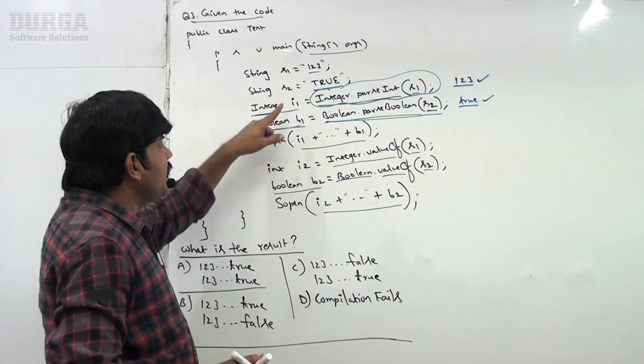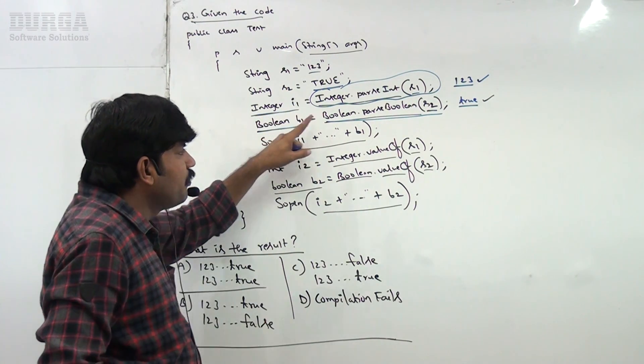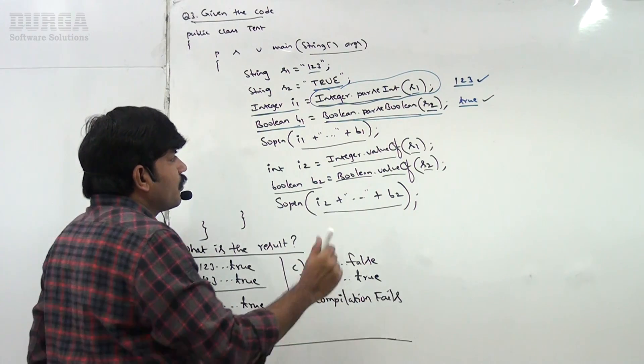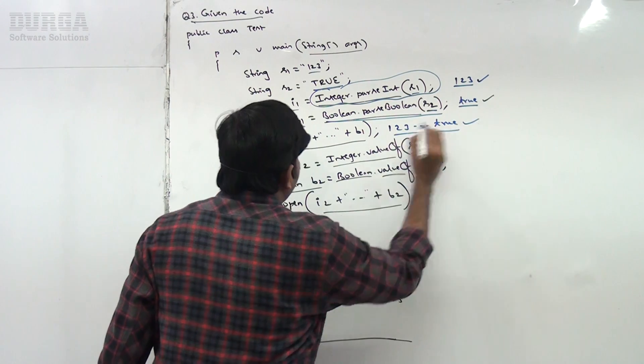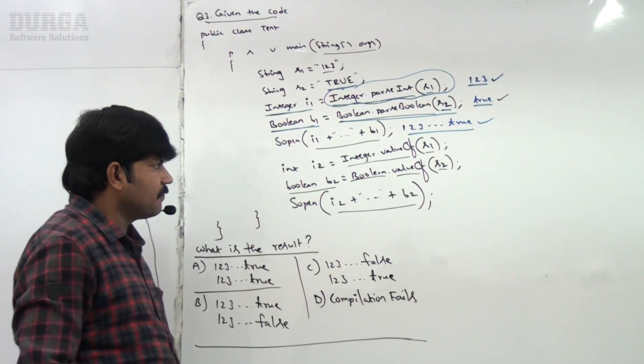Okay, that's why you know i1 is 123, b1 is true sir. We are going to get. So 123, true itself is the first System.out.println statement answer. Okay, well.